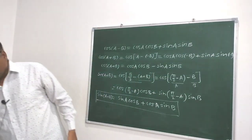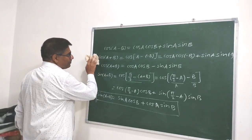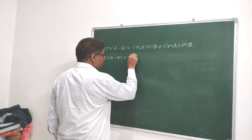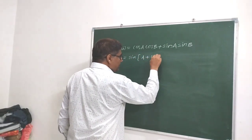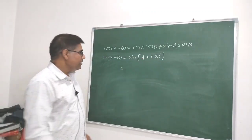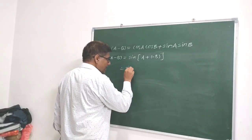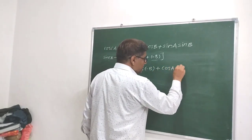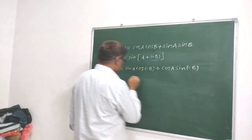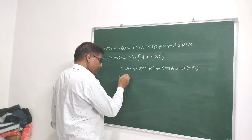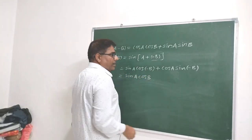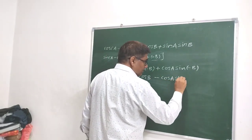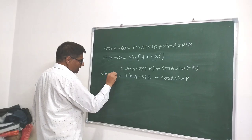Let us derive one more formula — for sin(A-B). sin(A-B) can be written as sin(A+(-B)), so we can apply the sin(A+B) formula: sin A · cos(-B) + cos A · sin(-B). Since cos(-B) = +cos B, we get sin A · cos B. And since sin(-B) = -sin B, we get minus cos A · sin B. Therefore, sin(A-B) = sin A cos B - cos A sin B.